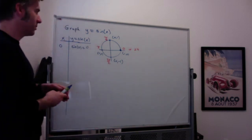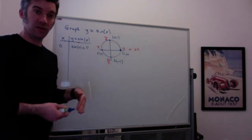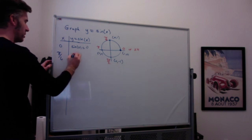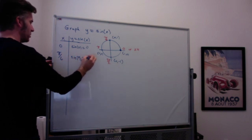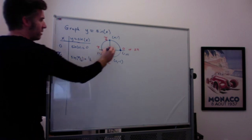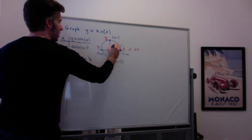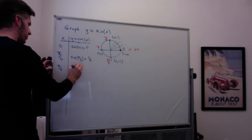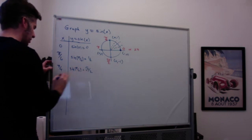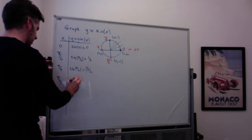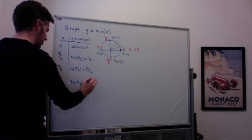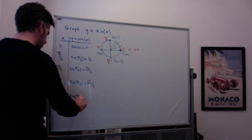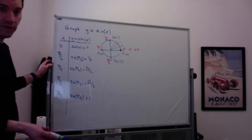From 0 to π/2, the sine values get bigger. Sine of 0 is 0, sine of π/6 is one half, sine of π/4 is √2/2, sine of π/3 is √3/2, and sine of π/2 is 1. We're going to use these values to help us start graphing.